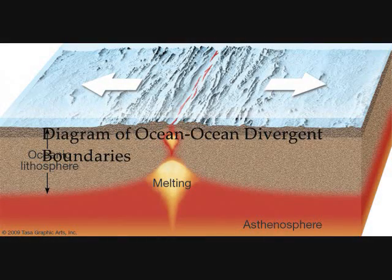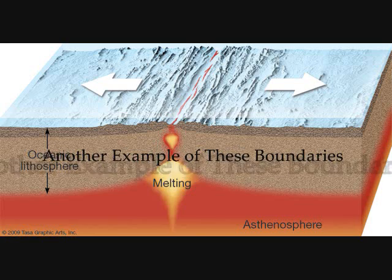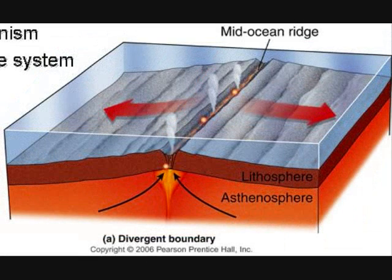The most common type of divergent plate boundaries are ocean-to-ocean divergent boundaries. These boundaries usually occur along mid-ocean ridges. This is where new oceanic lithosphere is created. As this is where seafloor spreading begins, these areas are called spreading centers.